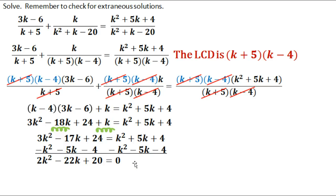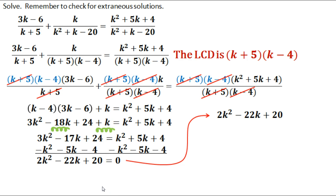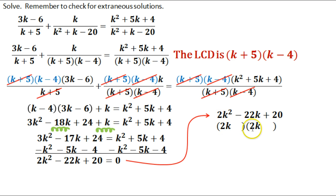From here I have several options — I can use the quadratic formula, factor out a 2, or factor the expression. The quadratic formula works all the time if you want to use it, but I'm going to model the factoring approach. So I'll rewrite 2k squared minus 22k plus 20 and set up my binomials, writing 2k in front. I know that's not right yet because 2k times 2k gives 4k squared — so we'll take that out in a moment.